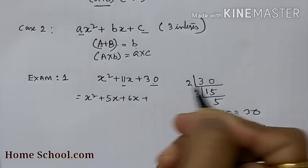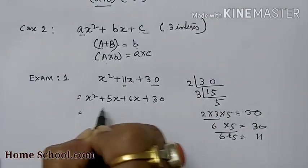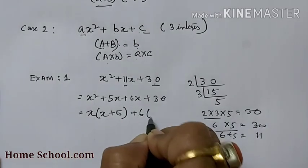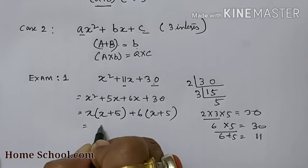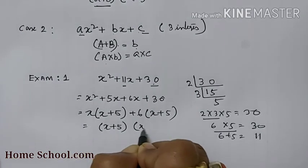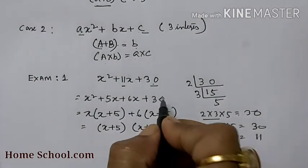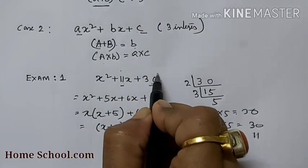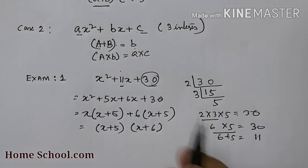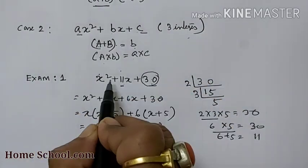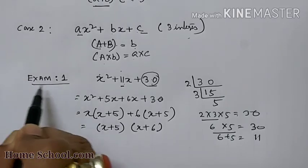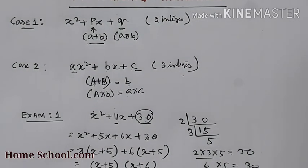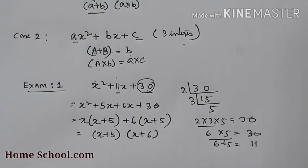So the trinomial x² + 11x + 30 can be split as x² + 5x + 6x + 30. Taking x common gives x(x + 5), and taking 6 common gives 6(x + 5). So the answer is (x + 5)(x + 6). This is how we split the middle term using the end integer for Case 1.